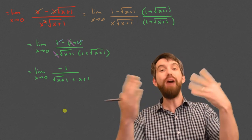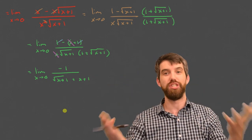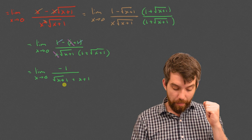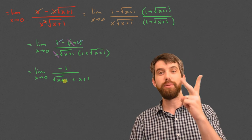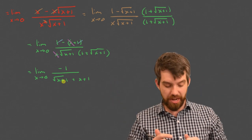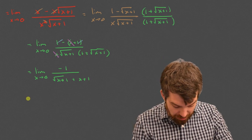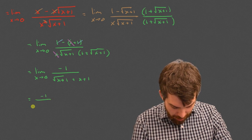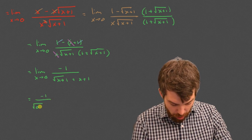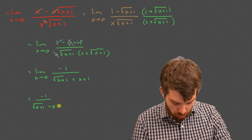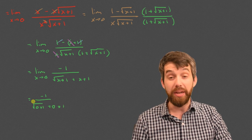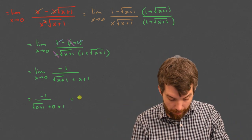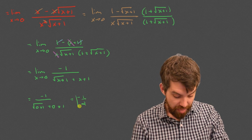Now let's see if the naive approach is justified. If I plug in 0, I get minus 1 on the top, and on the bottom I get 1 plus 1. Finally, I have something finite on the bottom. So this is just minus 1 divided by the square root of 0 plus 1 plus 0 plus 1, which is minus 1 over 2. And that is my final answer.